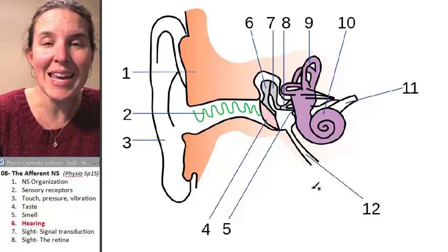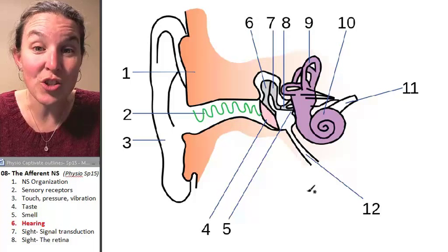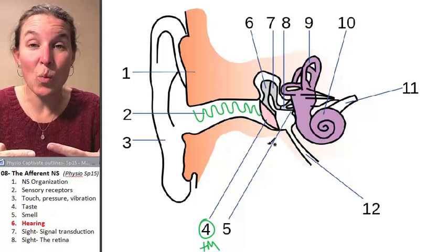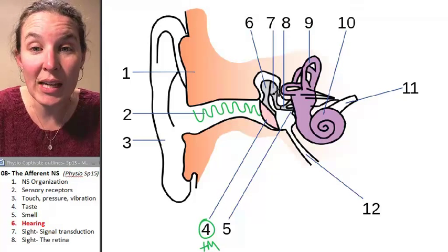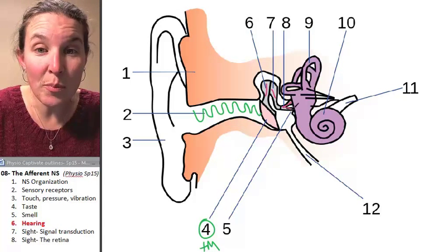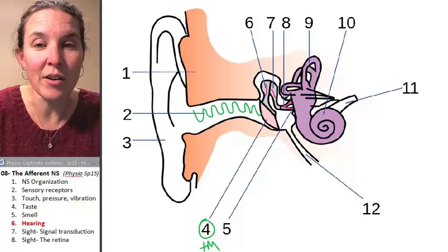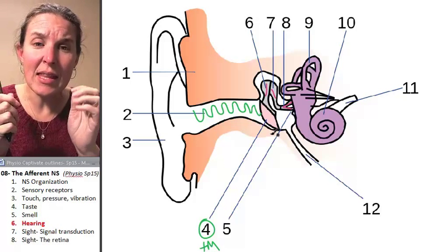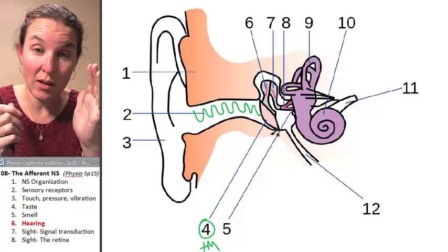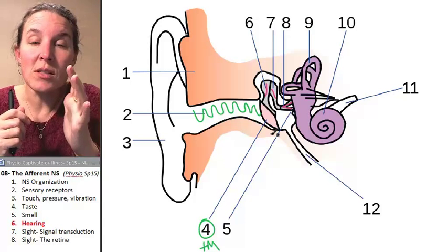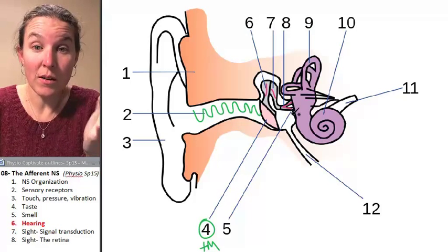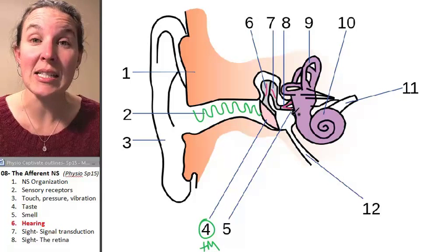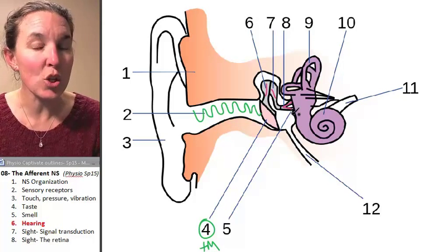When those sound waves hit the tympanic membrane, which is your eardrum, it causes the tympanic membrane to wiggle. Then you have a series of three middle ear bones. This is your outer ear, this is your middle ear. The middle ear is filled with air, and the tympanic membrane vibrates thanks to the sound waves. It wiggles the bones of the middle ear, and the wiggling of those bones basically amplifies the stimulus, amplifies the wiggle 22 times.